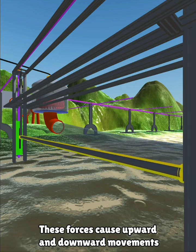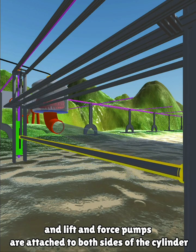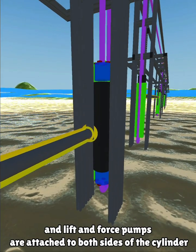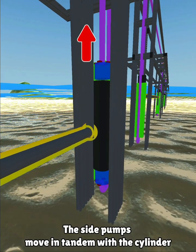These forces cause upward and downward movements, and lift and force pumps are attached to both sides of the cylinder. The side pumps move in tandem with the cylinder.